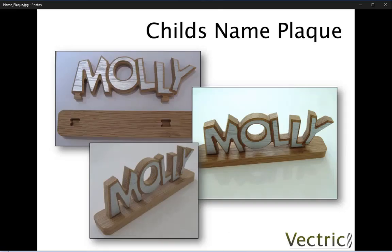In this tutorial we're going to show you how to import, create and edit vectors that you can use to machine the nameplate you can see on the screen. This is a two-piece assembly that we'll slot together using a mortise and tenon style arrangement. We're then going to look at organizing our vectors onto layers which will aid us when we come to toolpath them.